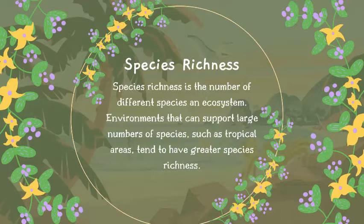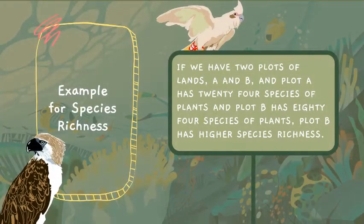First on the list is species richness — the number of different species in an ecosystem. Environments that can support large numbers of species, such as tropical areas, tend to have greater species richness. The Philippines is one example of this, as our country has a great number of different species and is considered one of the most biodiverse countries in the world.